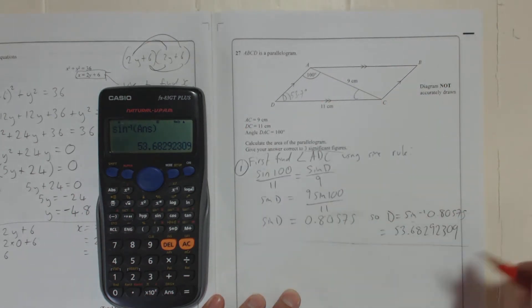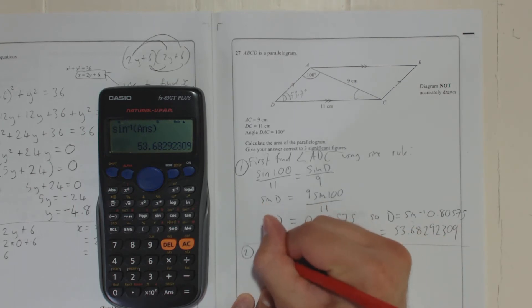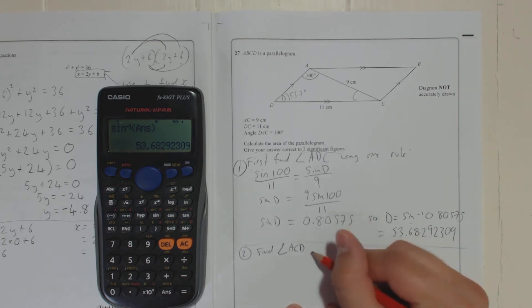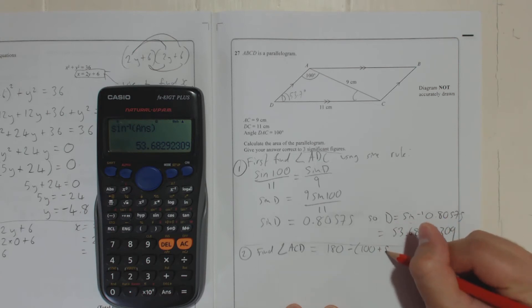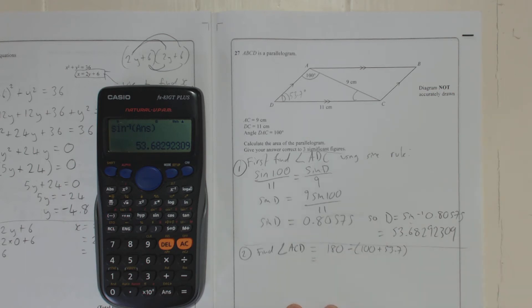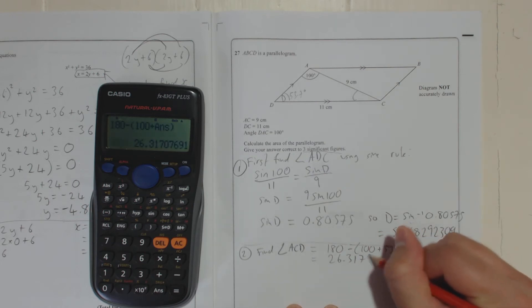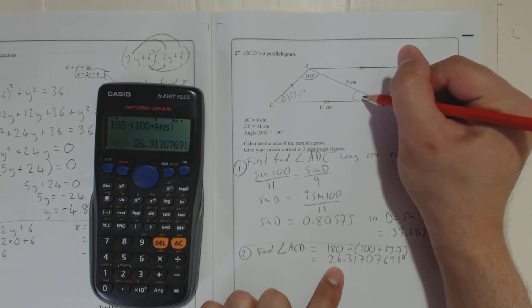I'm going to put 1 there. I might run out of space. I need to write smaller. Question 2, find angle ACD, which is a lot easier because all we're going to do is we're going to do 180, take away 100 plus 53.7. And again, we're going to try and keep full accuracy. We're going to keep that number in the calculator. So it's 180, take away the other two added up, 100 plus ANS, because that will be the 53.7 in full, which equals 26.3177691 degrees. So I'm going to write that in here, 26.3.